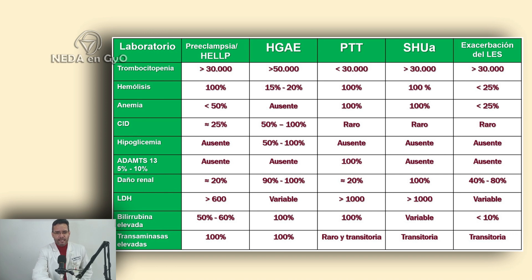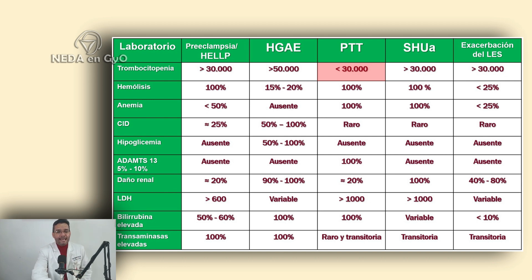Regarding thrombocytopenia: in HELLP syndrome, platelet levels are generally greater than 30,000 per cubic millimeter. In acute fatty liver of pregnancy, generally greater than 50,000. Thrombotic thrombocytopenic purpura has characteristically very low levels — in the majority of cases below 30,000. In atypical hemolytic uremic syndrome, levels are above 30,000, and in lupus exacerbation also above 30,000.